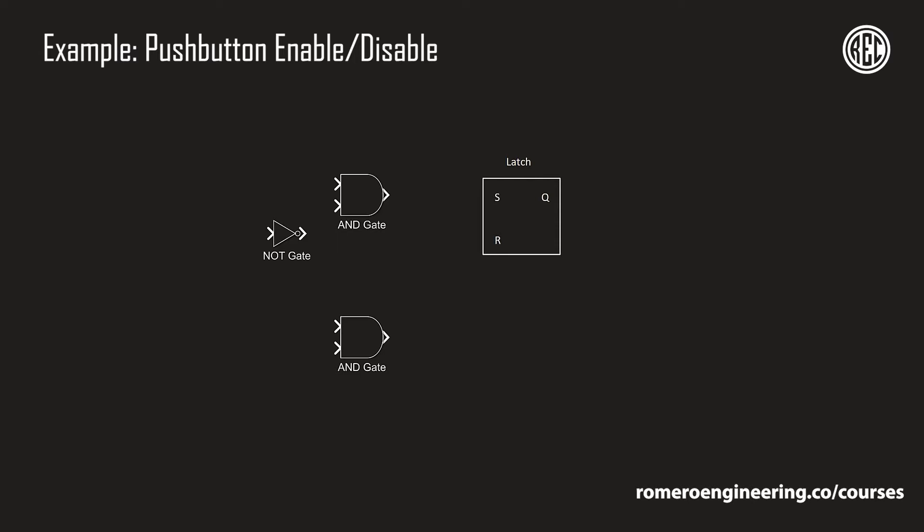For this example, we want to press a button in the relay to enable and disable the same function. So we press it once to enable it, and press it again to disable it. To do this, all we need is one latch, two AND gates, and one NOT gate.